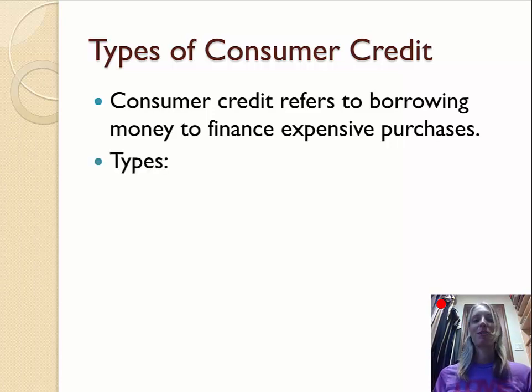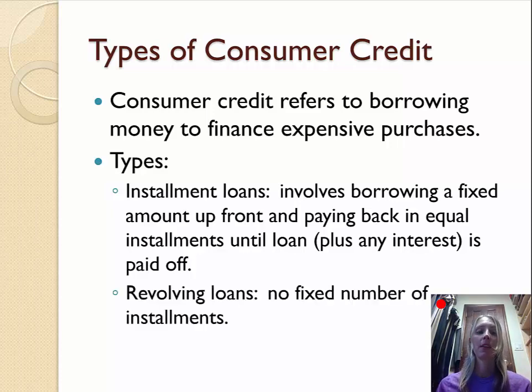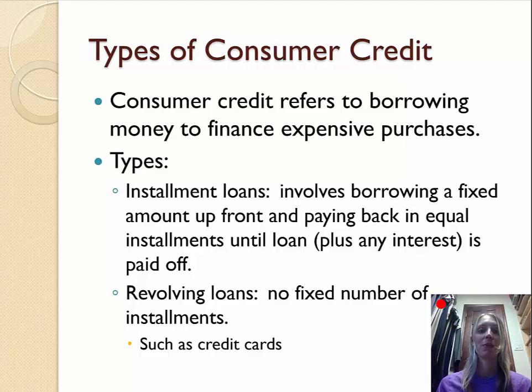So let's talk about the types of consumer credit now. One type is an installment loan. This involves borrowing a fixed amount upfront and paying back in equal installments until the loan, plus any interest, is paid off. We see these types of loans when you buy furniture or electronics. Another type of loan is a revolving loan. There's no fixed number of installments on a revolving loan, and the most common type of revolving loan by far is credit cards. We're not going to talk about revolving loans in this video. We're only going to focus on examples of installment loans.